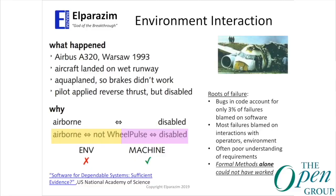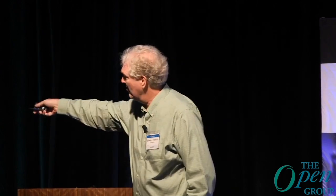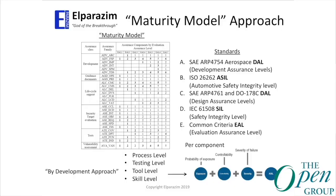This comes out of the 'sufficient evidence' paper: bugs in code account for about three percent of problems. Most issues appear when we don't understand how the software interacts with the rest of the world and the environment.